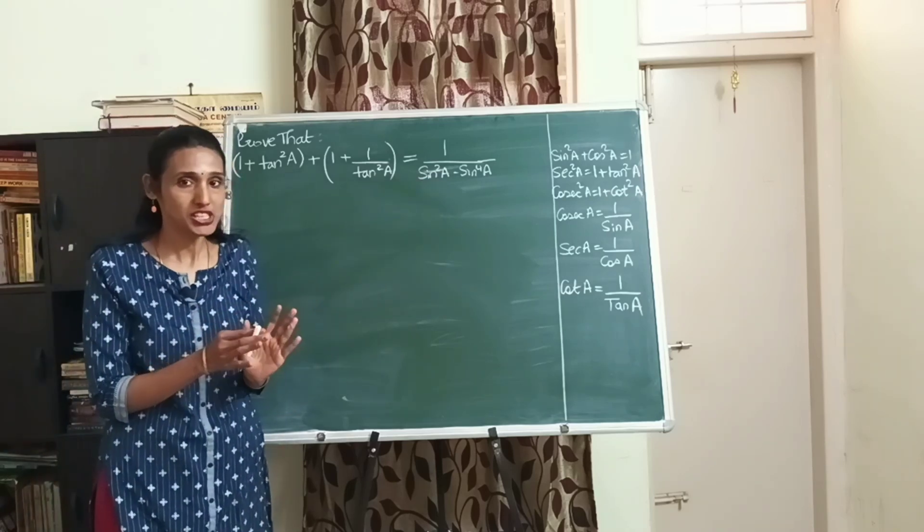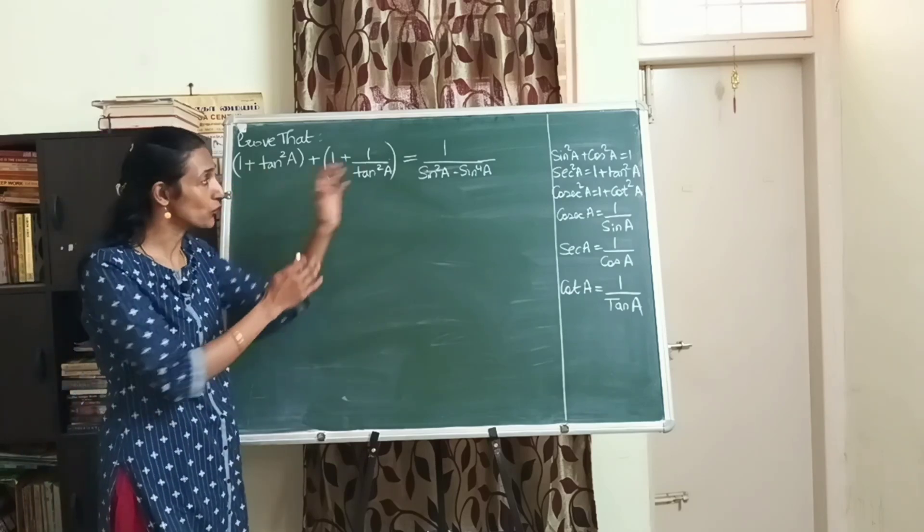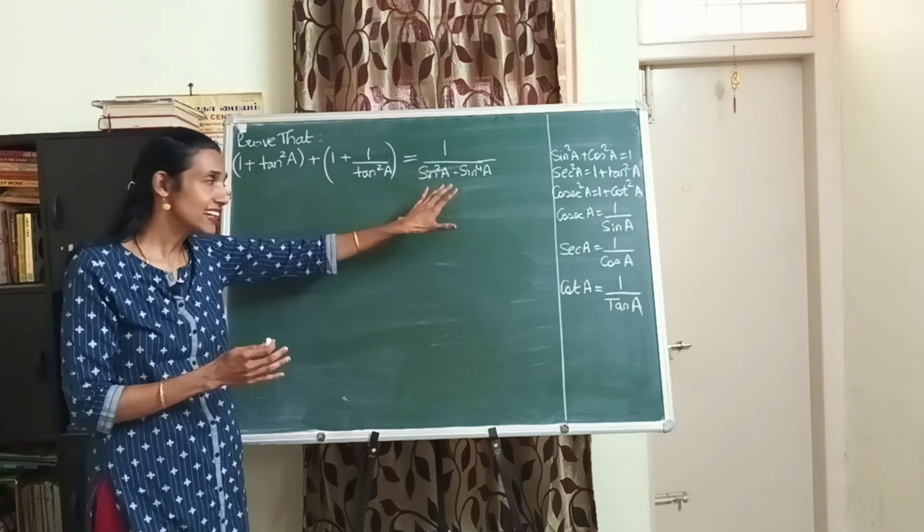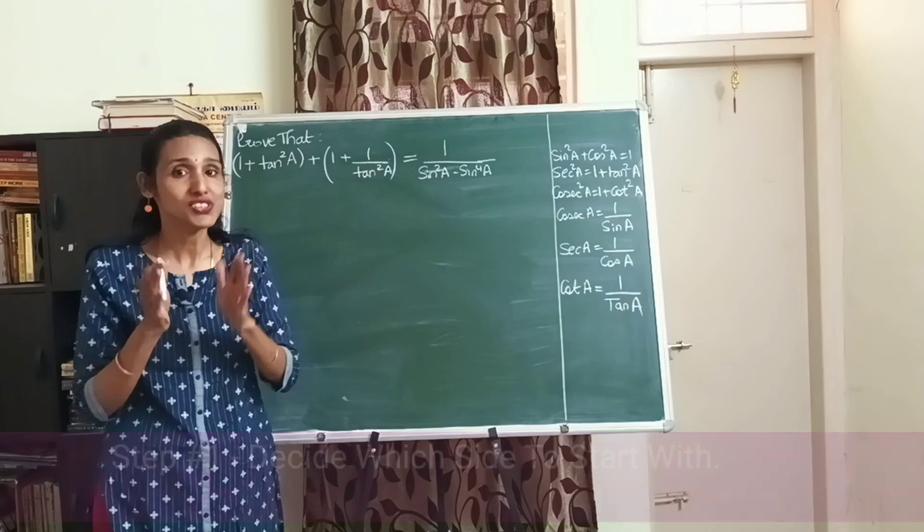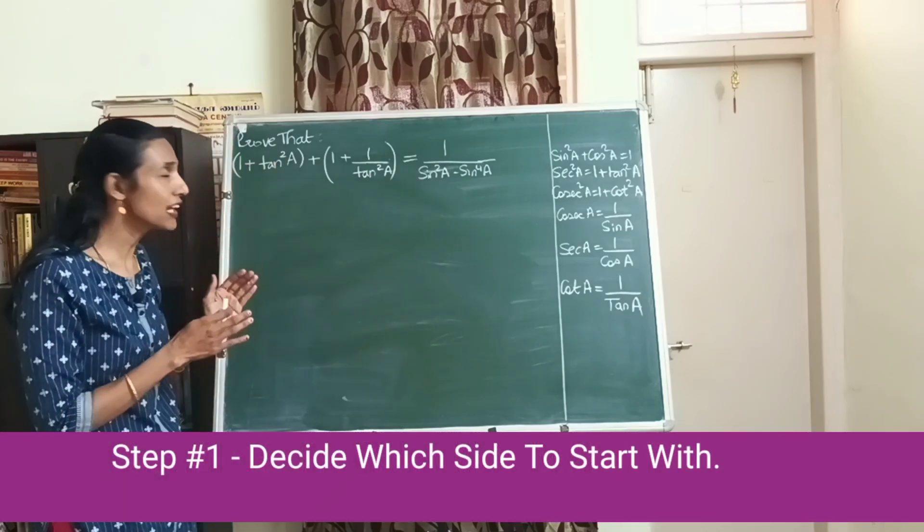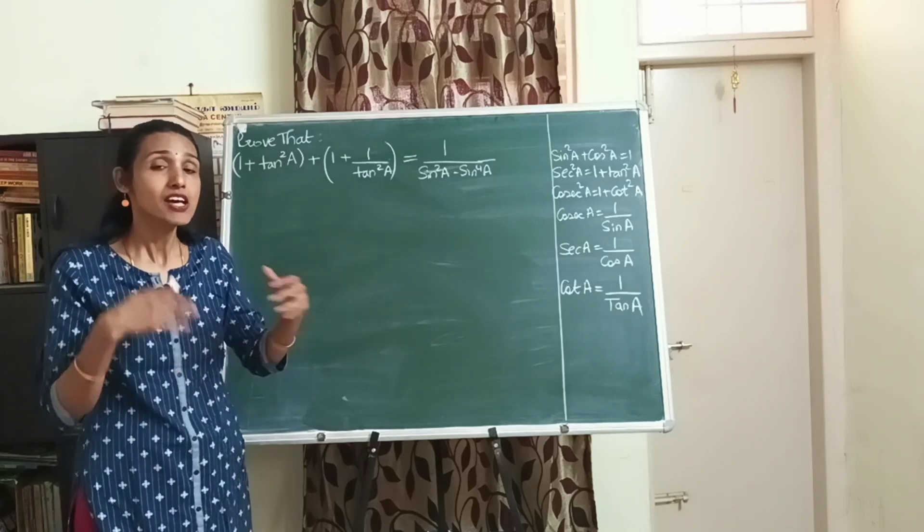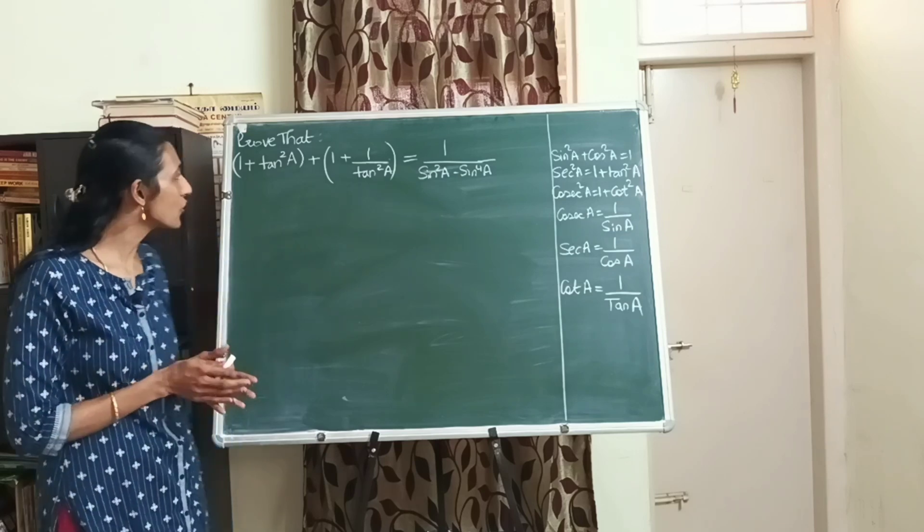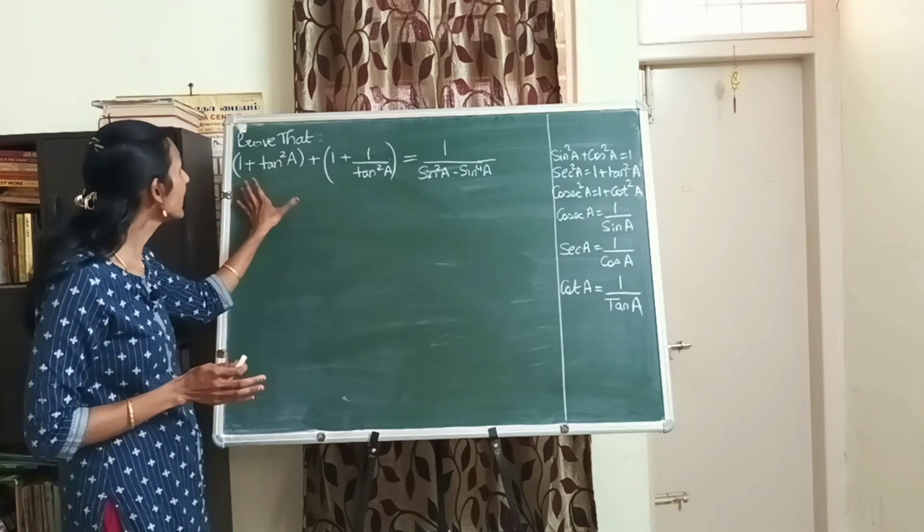In proof-that questions, we usually start with either the left hand side and prove that it's equal to the right hand side, or we start from the right hand side and show that it's equal to the left hand side. The very first step is to decide which side do we start with. Usually we start with that side which has more number of terms, which is more complex, so that we have more scope of simplification.